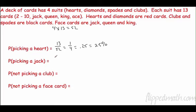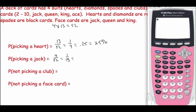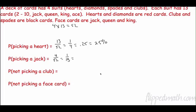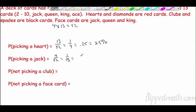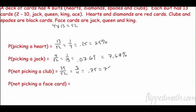What is the probability of picking a jack? There are four jacks — one per suit — out of 52 cards. That's four over 52, which reduces to one over 13. Remember to reduce all fractions. That's 0.0769, or 7.69%. Picking not a club means picking a heart, diamond, or spade — that's 39 out of 52, which reduces to three-fourths — 0.75, or 75%.